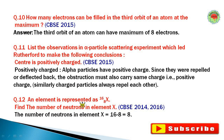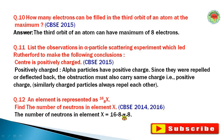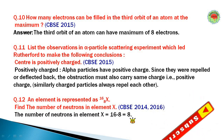Question number twelve: An element is represented as 16/8 X. Find the number of neutrons in element X. Number of neutrons = mass number minus atomic number = 16 minus 8 = 8. So there are 8 neutrons in element X.